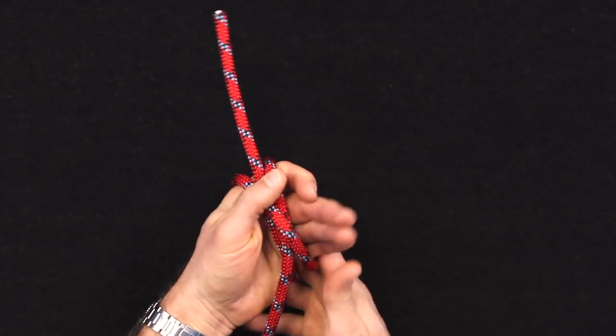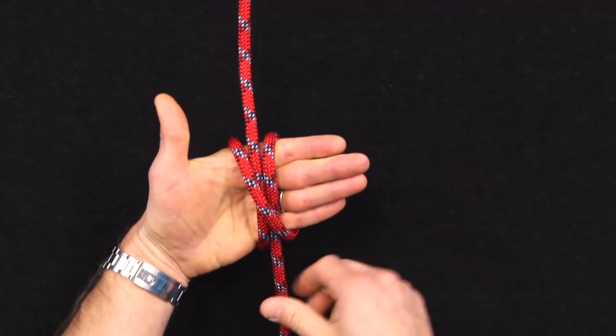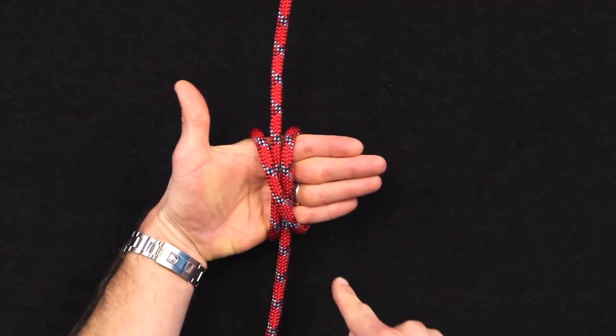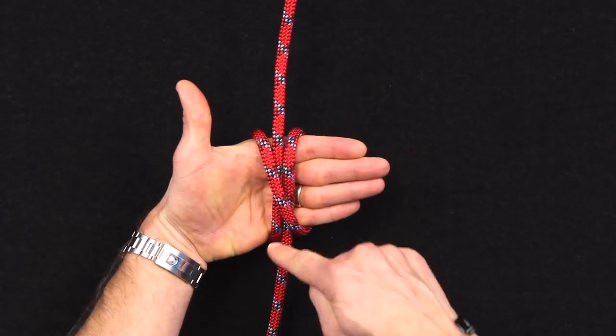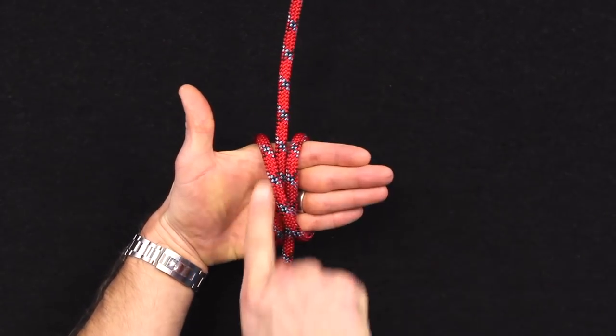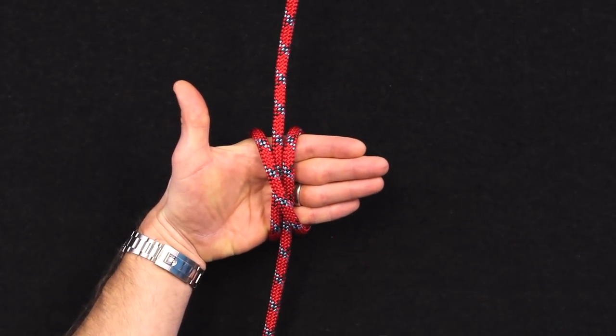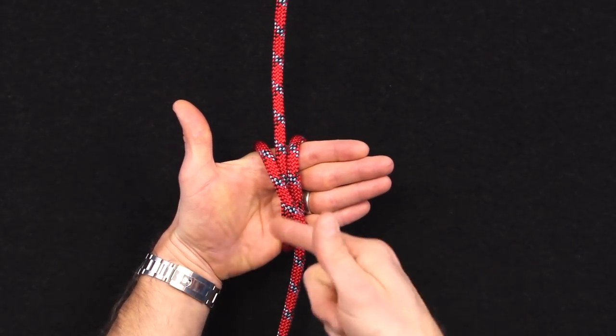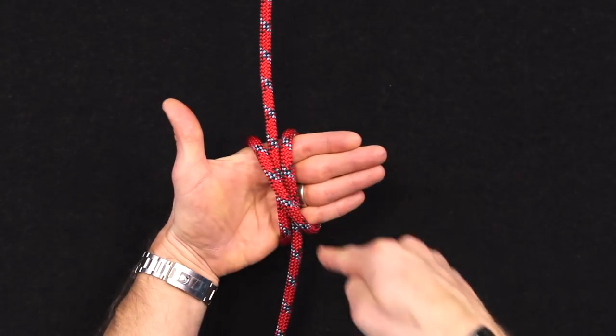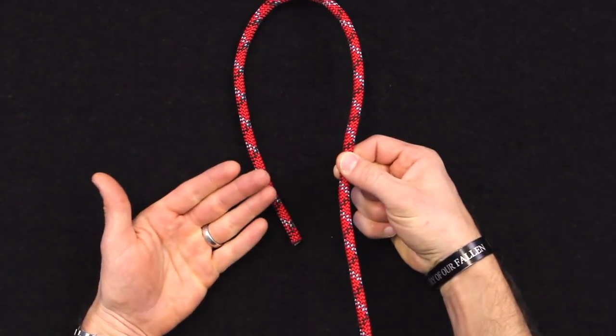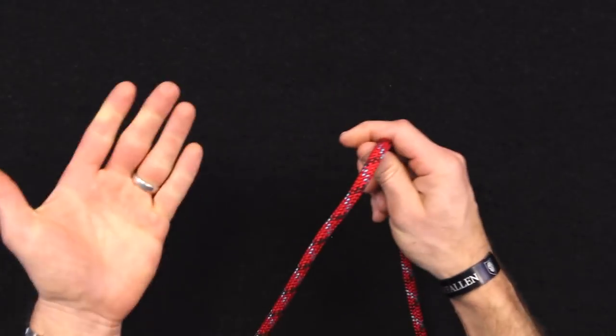So once you clean it up, what you get is kind of this pattern that looks like so. You'll have something that looks like an X or a slash across two ropes, one being your working end that's running here and one being your standing end that's running down this way. So the checkpoint on a clove hitch is that you can grab that slash line and just pull right up and it removes the knot itself, which is really a hitch.